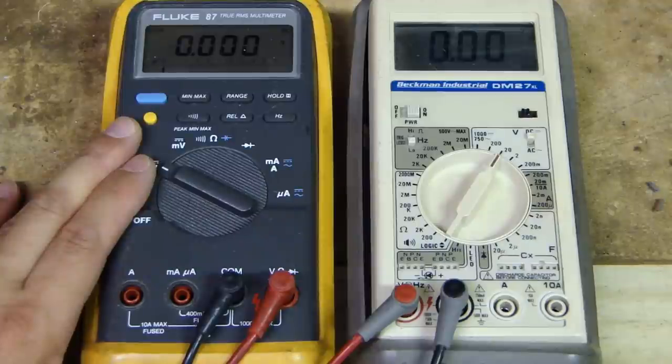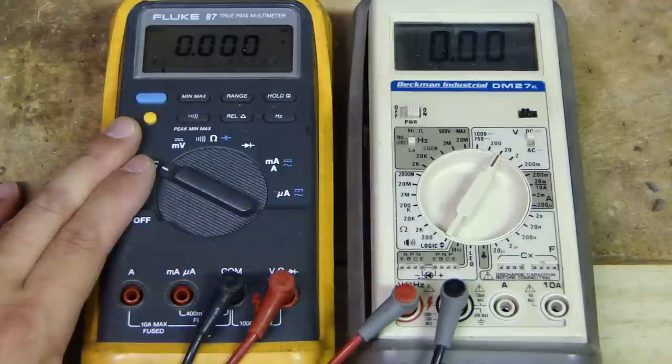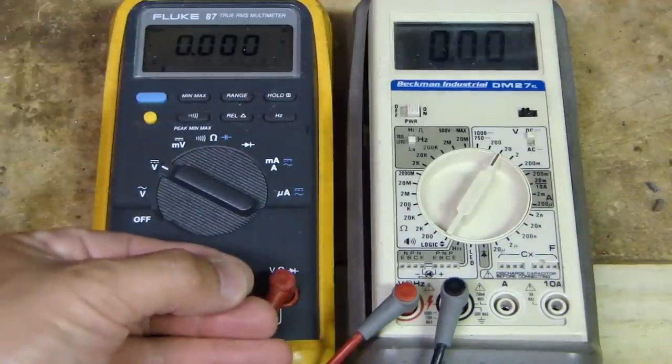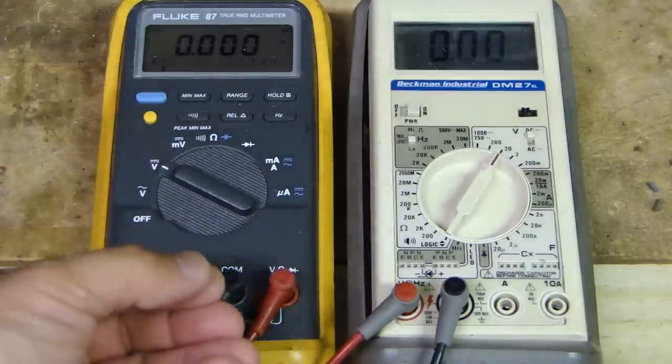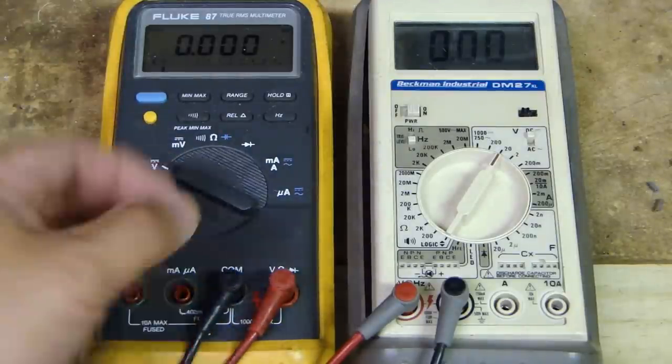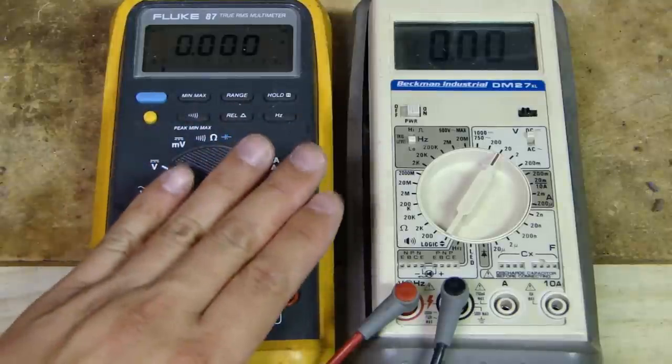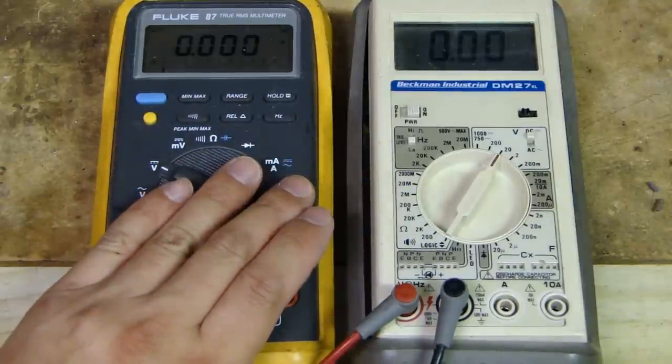I highly don't recommend you using one of those, because if you were to use a test light on any type of sensitive electronics in a vehicle, the test light can draw a lot of current. It's a light bulb, so it can draw a lot of current, and if you have some sensitive electronics, it can do a lot of damage to the electronic itself.